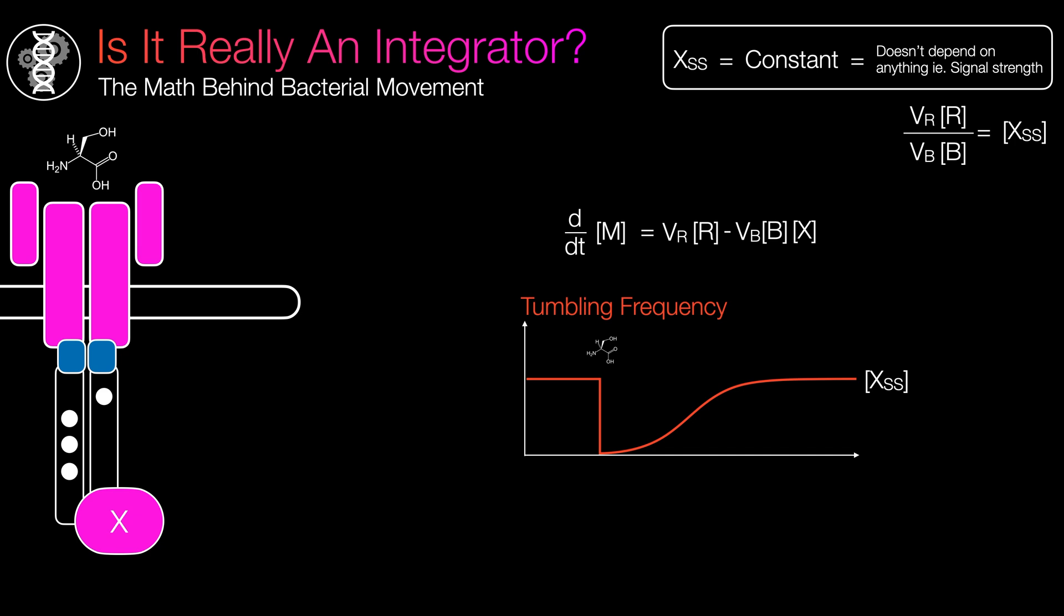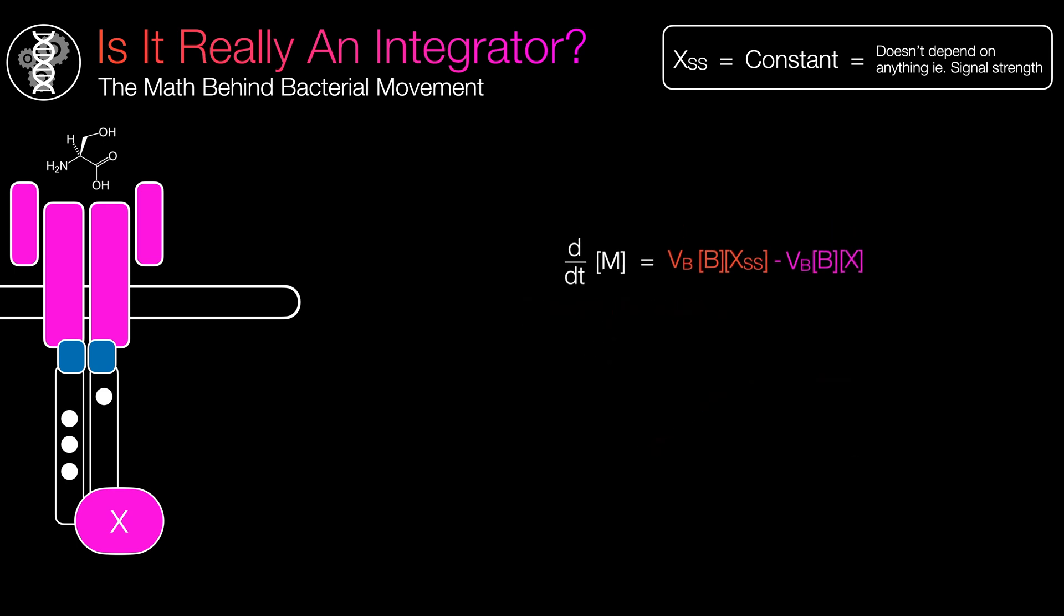We substitute X steady state into the equation, solve for methylation. And after a few algebraic steps and integrating both sides, you can see that this equation represents integral control. The methylation serves as the effort exerted by the controller, while the error represents the difference between the steady state X and the current X value. Look at how effortlessly this emerged. Nature truly is remarkable, isn't it?